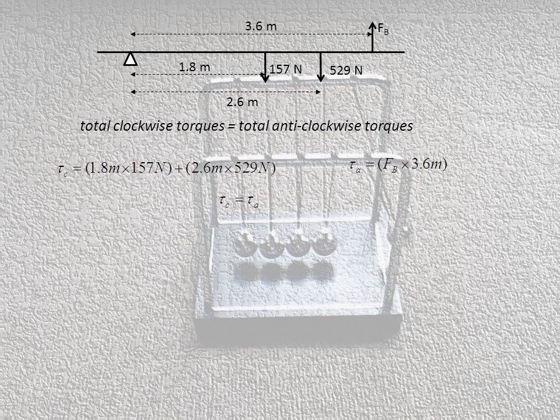Our anti-clockwise torques is going to equal whatever the force of B is times 3.6 meters, because this force is 3.6 meters away from our fulcrum or our pivot. Knowing that total clockwise torques will always equal total anti-clockwise torques at equilibrium, and we'll assume that this is at equilibrium. All of these questions that we look at to do calculations, we'll assume that the levers or benches are static, they're not moving, they're at a constant speed, so therefore they're at equilibrium.